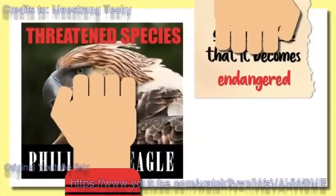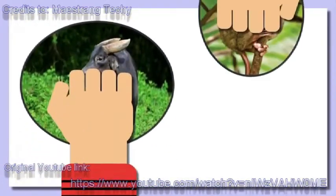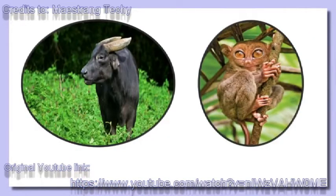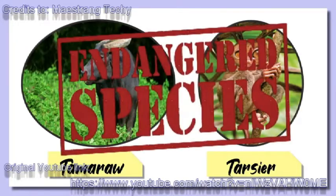Next, let us have threatened species. These are species wherein their population declines so fast that it becomes endangered. One example is our Philippine eagle or the monkey-eating eagle. Take a look at these pictures. The first picture is Tamarau from Mindoro and Tarsiers that are usually seen in Bohol, Philippines. When a species population becomes so low that only a few remain, the species is considered endangered, just like the Tamarau and Tarsier in the Philippines.